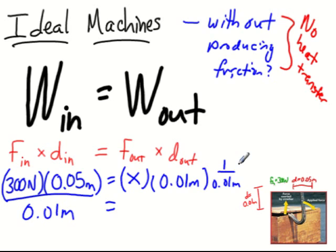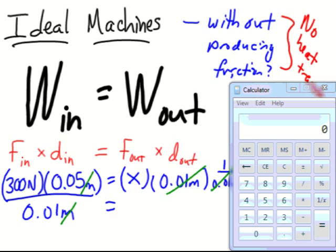On the right side of the equation, one hundredth of a meter cancels out. On the left side, meters will cancel out. We can plug that into our calculator: type 300 newtons times five hundredths of a meter divided by one hundredth of a meter, and we get a value of 1,500.